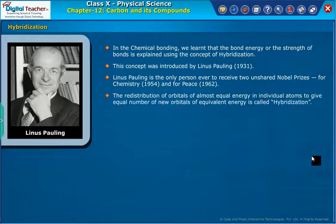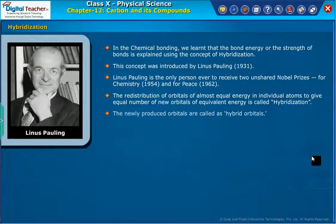The redistribution of orbitals of almost equal energy in individual atoms to give equal number of new orbitals of equivalent energy is called hybridization. The newly produced orbitals are called hybrid orbitals.